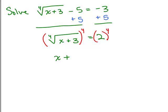So we get x plus 3 on the left-hand side, and 2 to the fourth is 2 times 2 times 2 times 2, which is 16, and then we simply subtract 3 from both sides to get x equals 13.